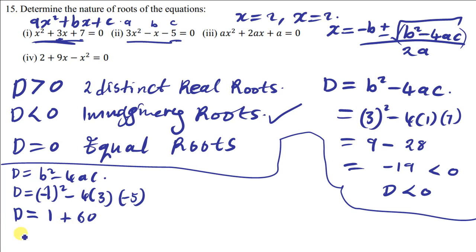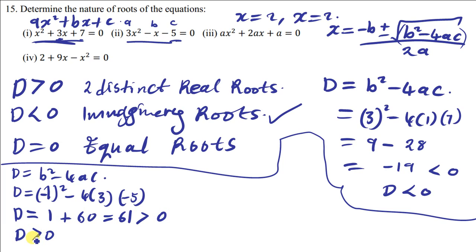Adding 1 and 60 gives D equals 61. Since 61 is greater than zero, our discriminant is greater than zero. This means the given quadratic equation has two different real roots, or two distinct real roots.